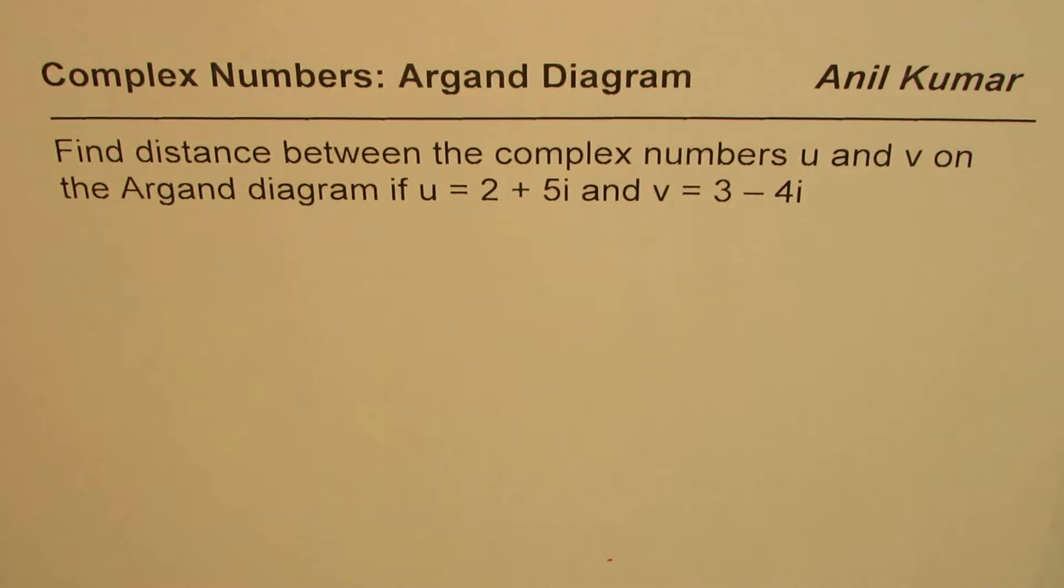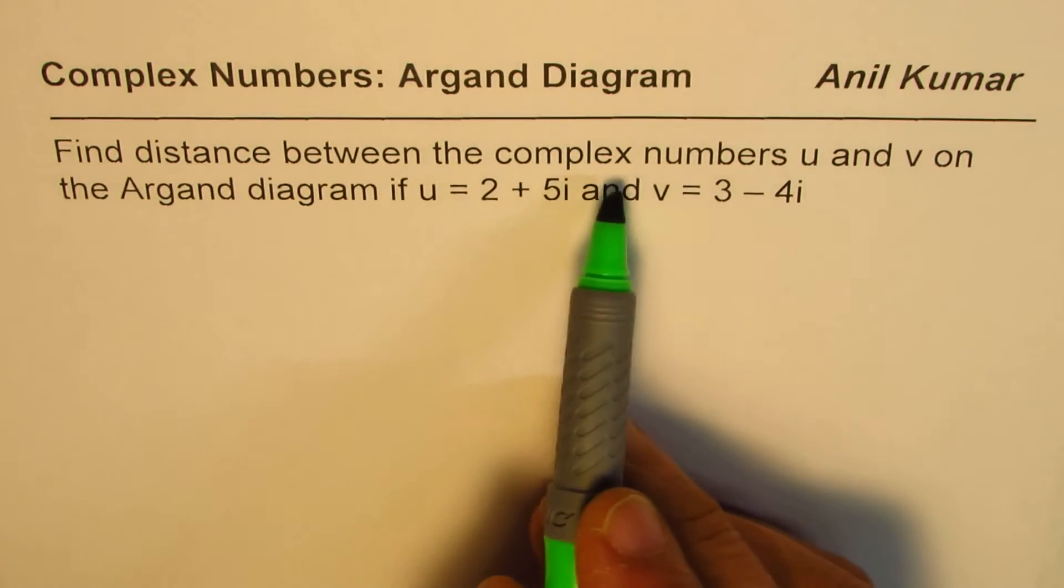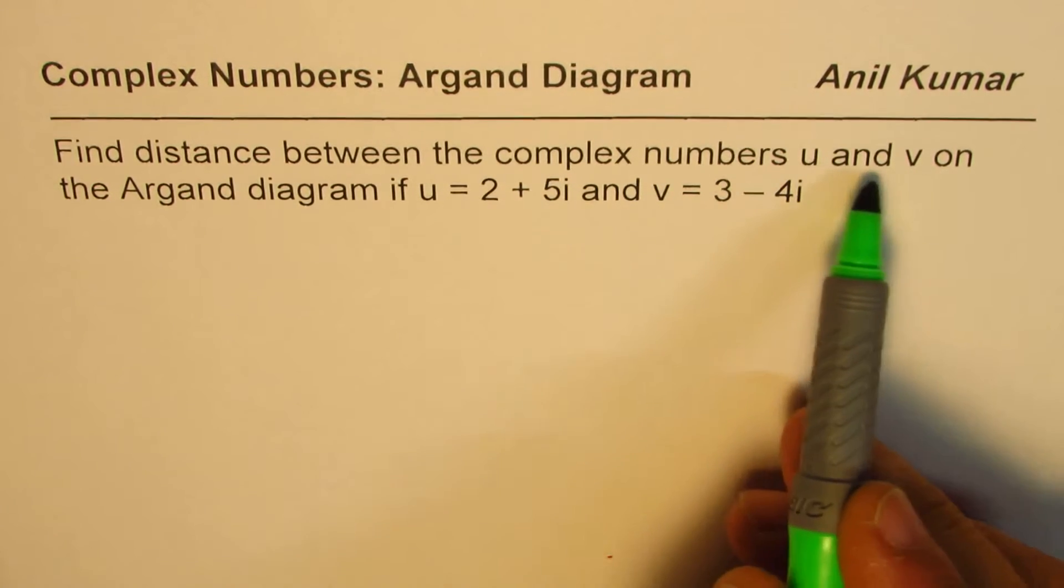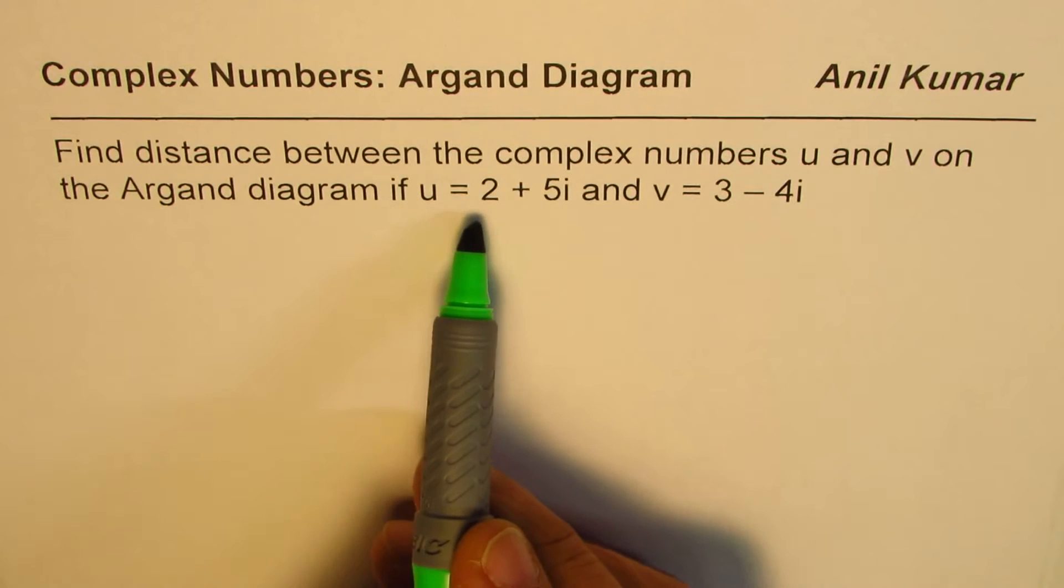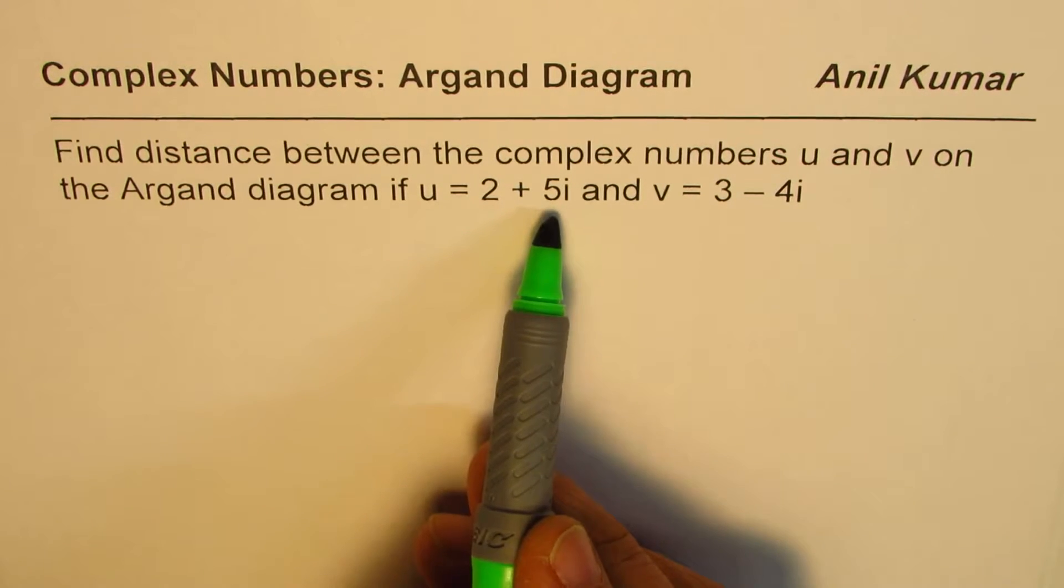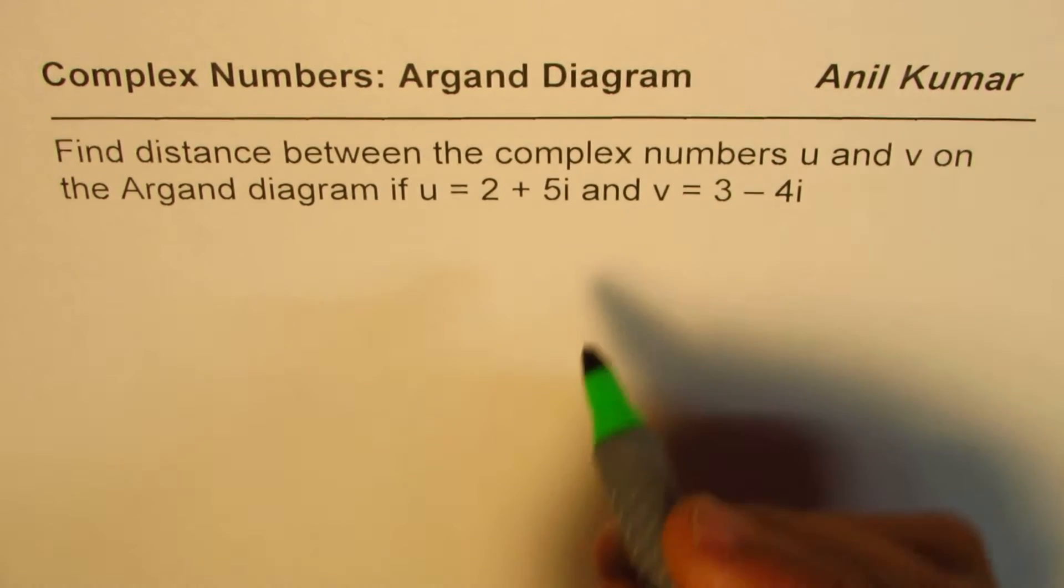I'm Anil Kumar. We'll try to find distance between two points when they are represented by complex numbers. The question here is: find distance between the complex numbers u and v on the Argand diagram if u equals 2 plus 5i and v equals 3 minus 4i.